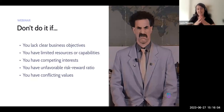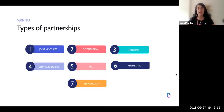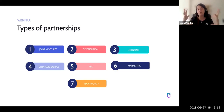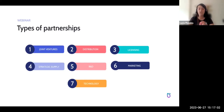The last reason not to enter a partnership is if you have conflicting values. Now, what are the types of partnerships? Keep in mind this is always a short list — there are so many types it would be impossible to cover all of them. The most common ones are: joint ventures, distribution partnerships, licensing or franchising, strategic supply, research and development, marketing, and technology partnerships.